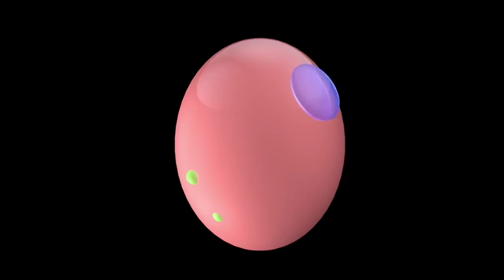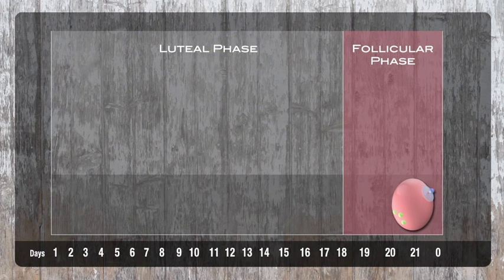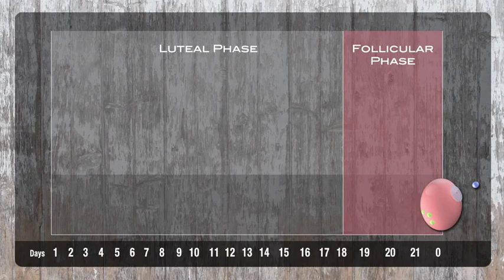As progesterone concentrations drop estrogen from the developing follicle increases culminating in standing estrus or heat and release of a large amount of GnRH and LH. This causes ovulation of the follicle in about 28 hours and release of the ovum.